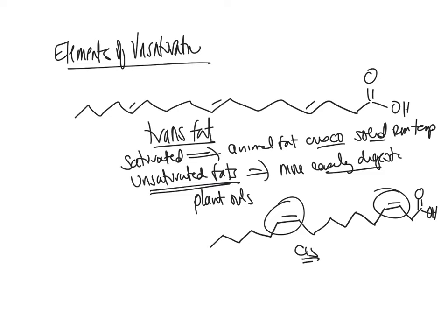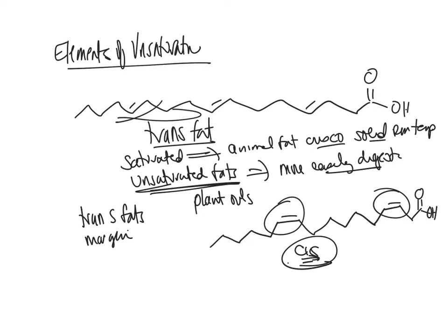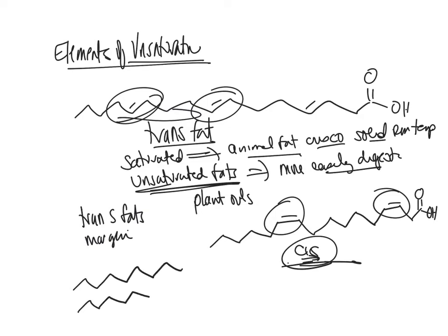Plant oils typically have cis bonds, which create kinks in the structure. This prevents the chains from stacking tightly — like trying to separate a fresh stack of flat paper versus crumpled sheets. Those kinks make them easier to digest. Trans fats are man-made, created when we manipulate plant or animal fats — for example, to make margarine — producing trans bonds that are not good for you.